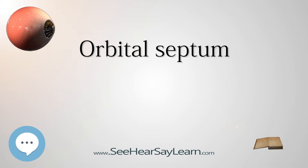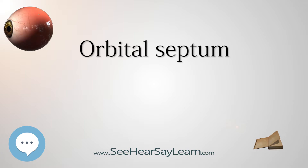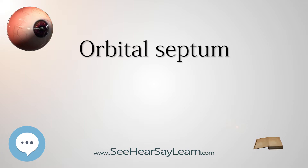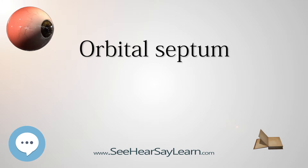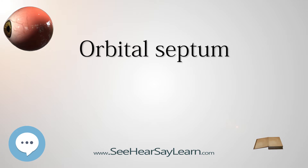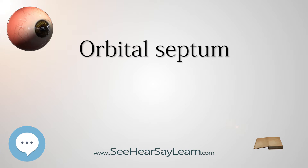The medial ligament and its much weaker lateral counterpart, attached to the septum and orbit, keep the lids stable as the eye moves. The septum is perforated by the vessels and nerves which pass from the orbital cavity to the face and scalp.